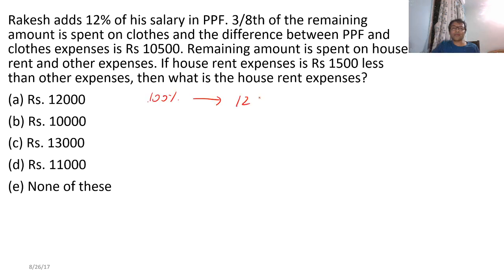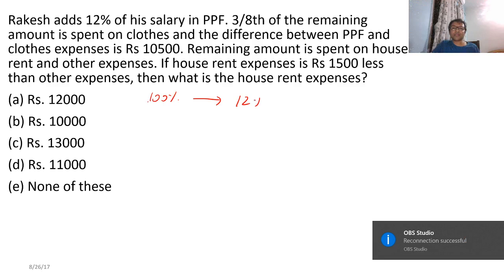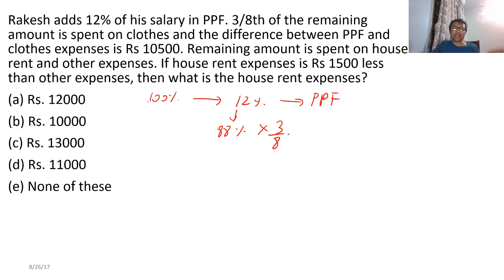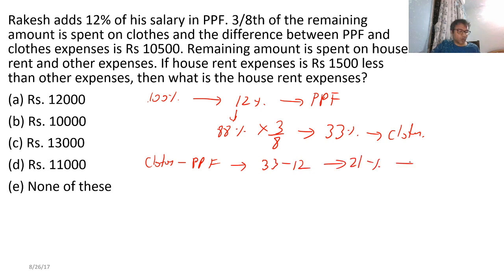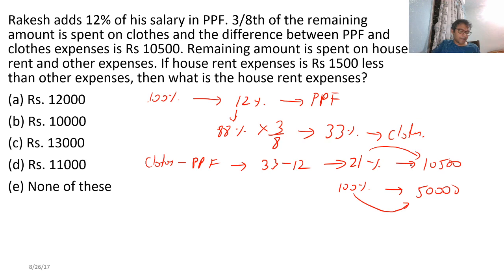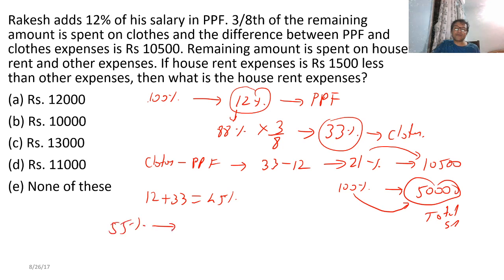12% goes to PPF; the remaining 88% — from that, 33% goes to clothes. So the difference between clothes and PPF is 33 minus 12 = 21%. This 21% equals ₹10,500. So total salary (100%) equals ₹50,000 — since 21% half is 10.5 and 100% half is 50, total is 50,000. After PPF and clothes (12 + 33 = 45%), the remaining 55% is left.